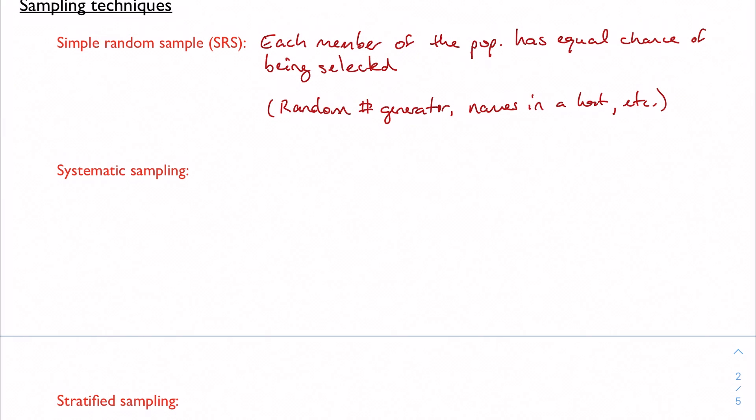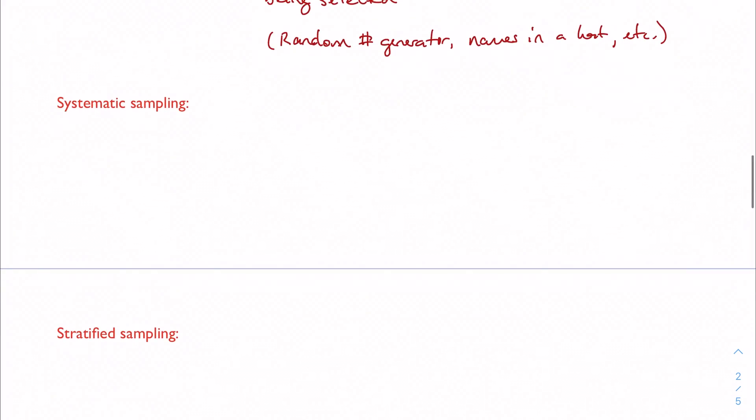So with the systematic sampling, you're not obviously being random with this. So this would be a case where you list out the members of the population and you're going to choose based on a fixed starting point and interval.